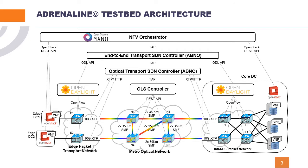On the data plane, the Optical Transport network is composed of four reconfigurable optical add-and-drop multiplexers controlled by means of a REST API by the OLS controller, and a set of Open Virtual switches controlled by OpenDaylight controllers using OpenFlow. The Virtual Infrastructure Managers used are based on OpenStack.